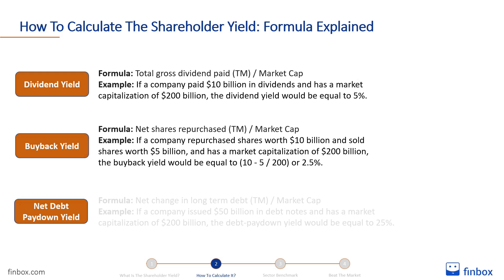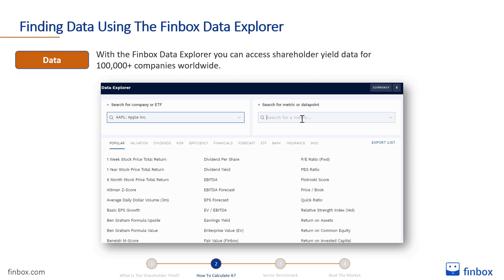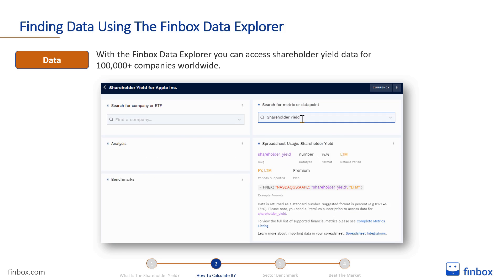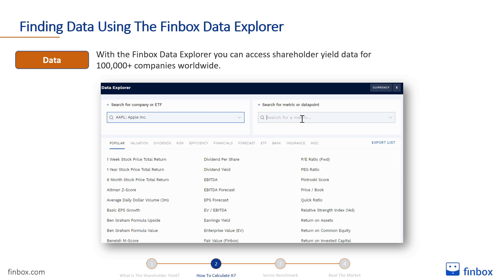The debt paydown yield is equal to the net change in long-term debt over the trailing 12-month period divided by the company's market capitalisation. If a company issued $50 billion in debt notes and has a market capitalisation of $200 billion, the debt paydown yield would be equal to 25%. You don't need to do the calculation alone and you don't have to use a shareholder yield calculator. You can use the Finbox Data Explorer to access shareholder yield data for 100,000-plus companies worldwide.